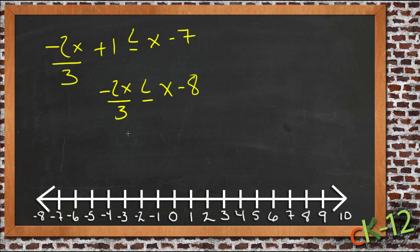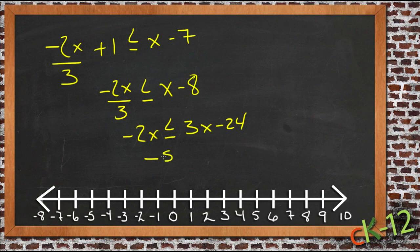Multiply everything by 3. We'll get negative 2x is less than or equal to 3x minus 24. Combine our like terms. Subtract 3x from both sides. So we'll get negative 5x is less than or equal to negative 24.